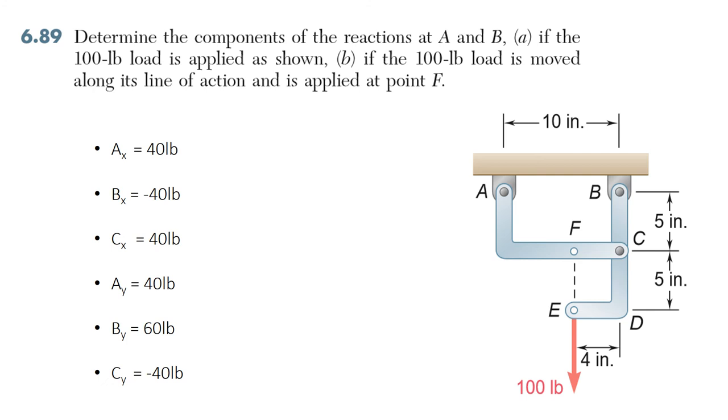Going back to the original question, part A asks us to find all the reactions at A and B, and we actually found the reactions at C as well. If we want to do part B, we would take the exact same steps, except move the 100 pounds force to point F, and member BE would be our two-force member. I'll leave the answers for part B in the description.